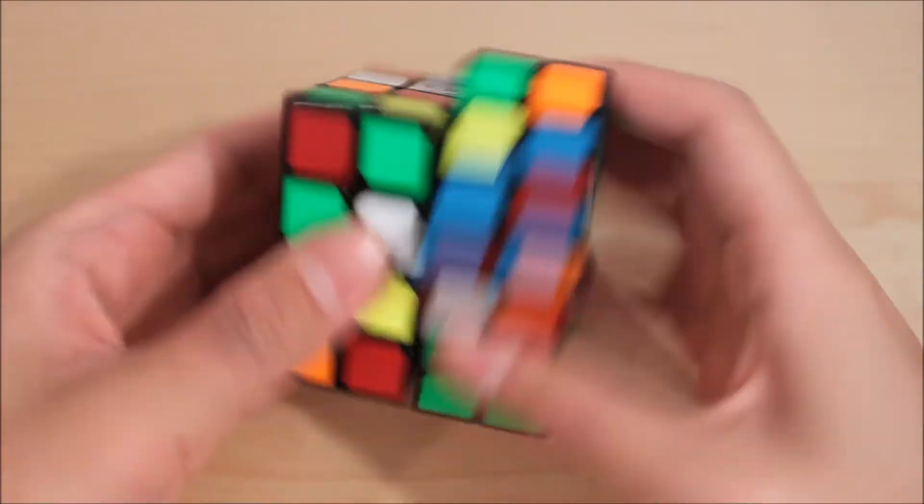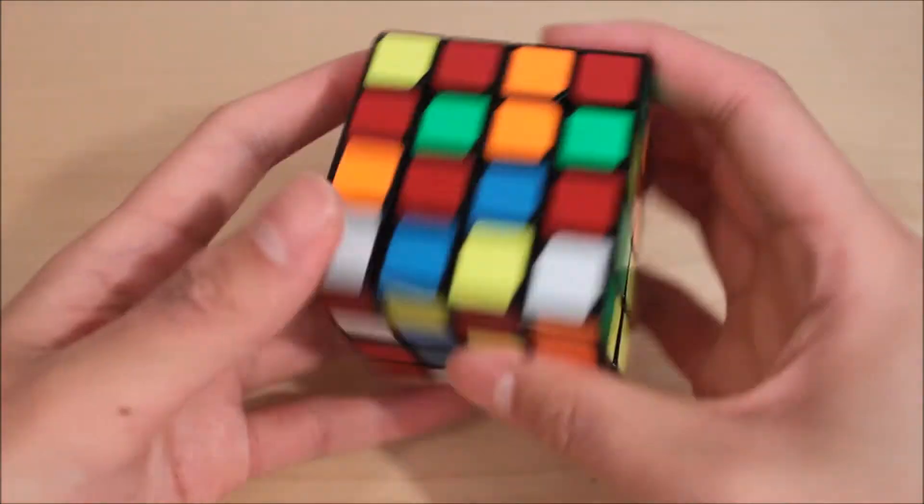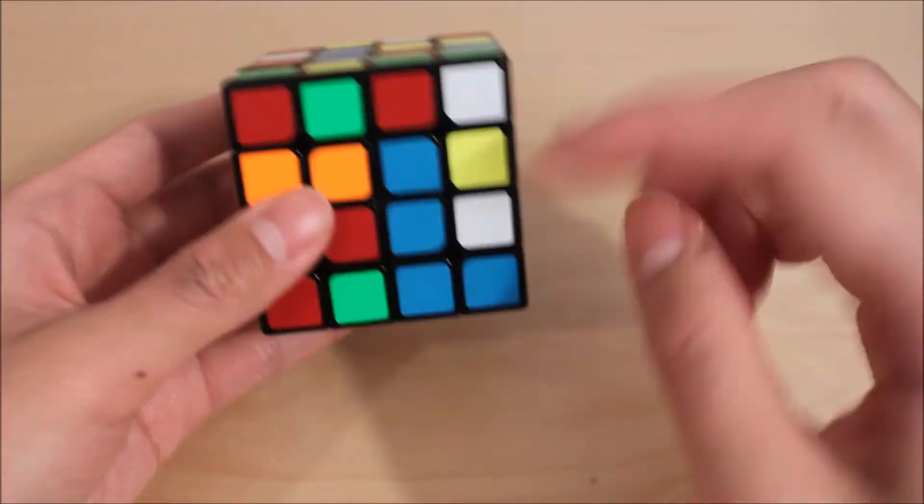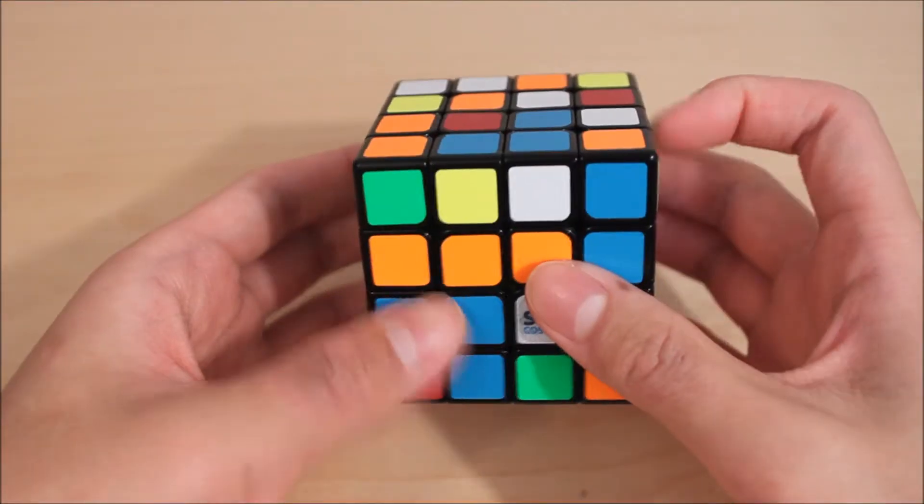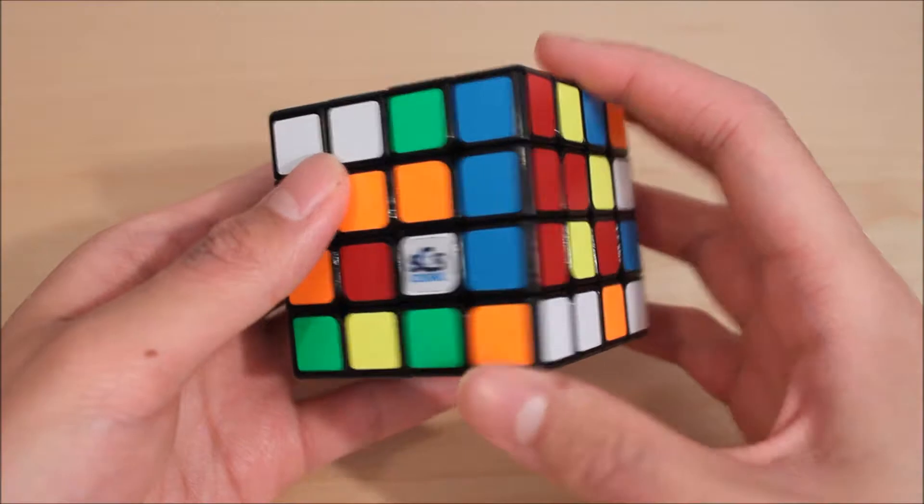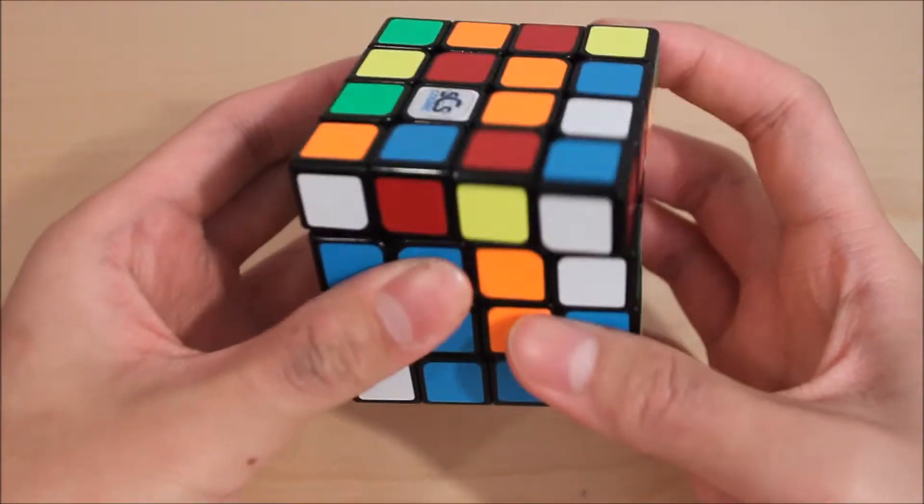The second option is to keep the cube in an odd parity state by using only preserving moves until you're almost done with two adjacent centers. At the end, do one inner quarter turn to get it into an even parity state. The final method is simply to combine the first two, using mostly preserving moves but using some regular moves to make sure the solve isn't too inefficient. This will probably be the most ideal method for most people.